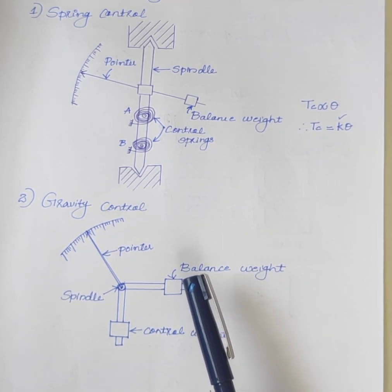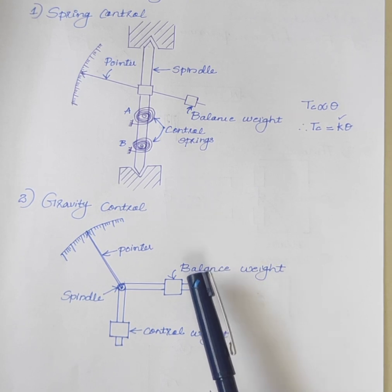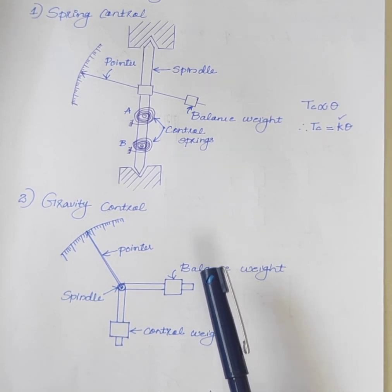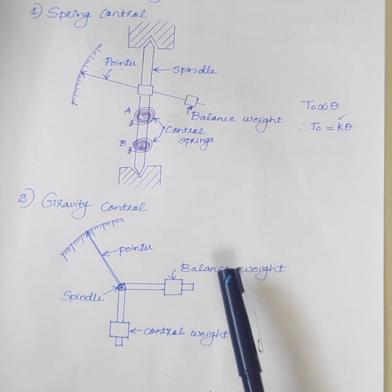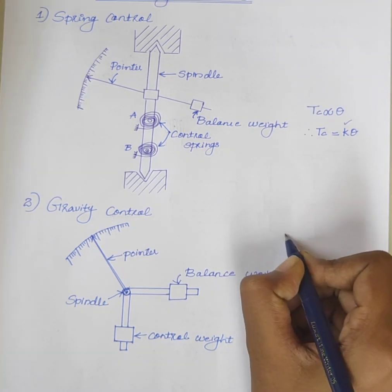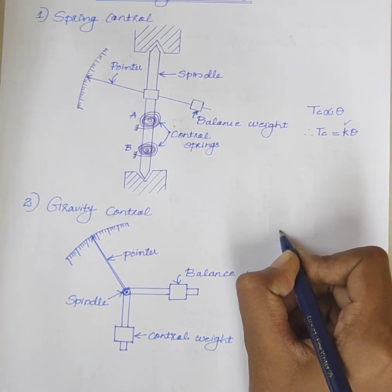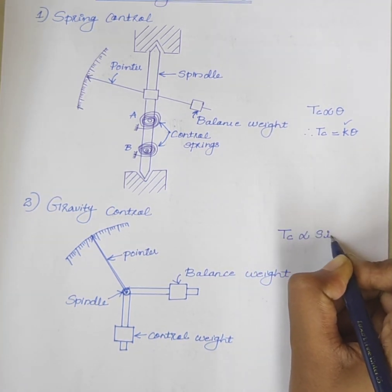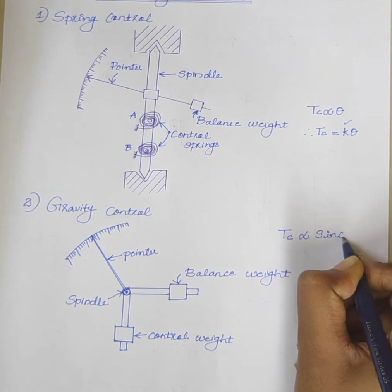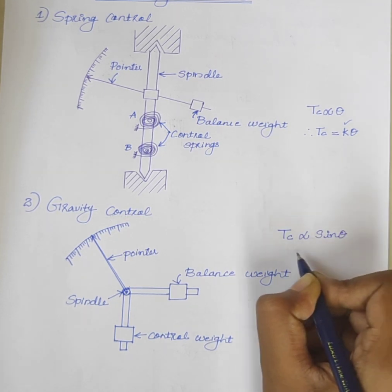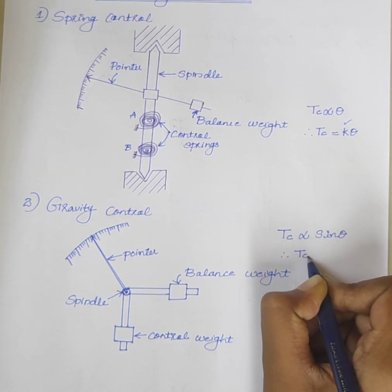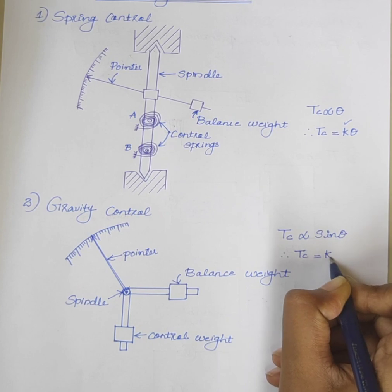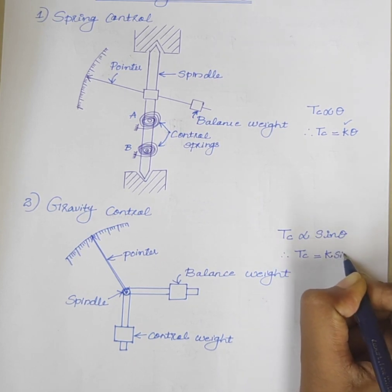Gravity control is cheap but it is mainly used in vertical instruments. In a gravity control instrument, controlling torque Tc is proportional to sin Theta. Therefore, Tc is equal to K into sin Theta.